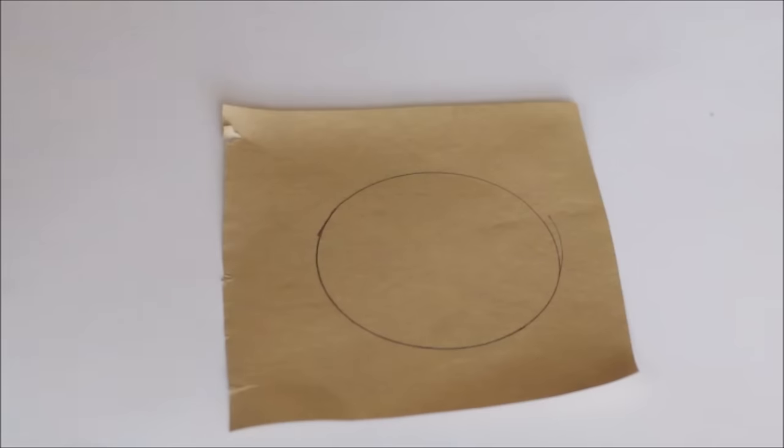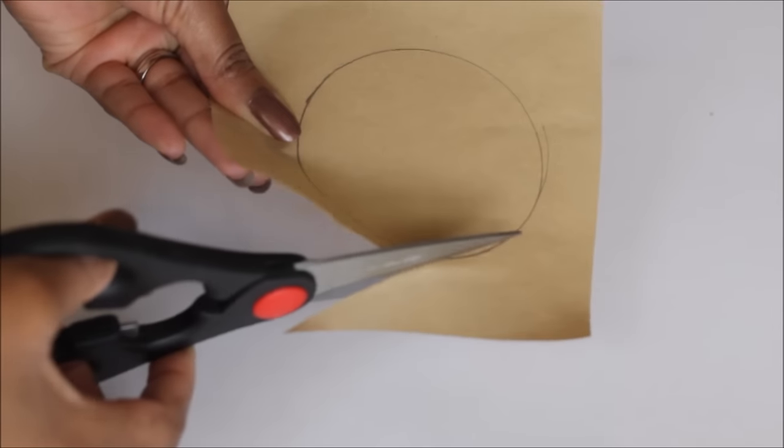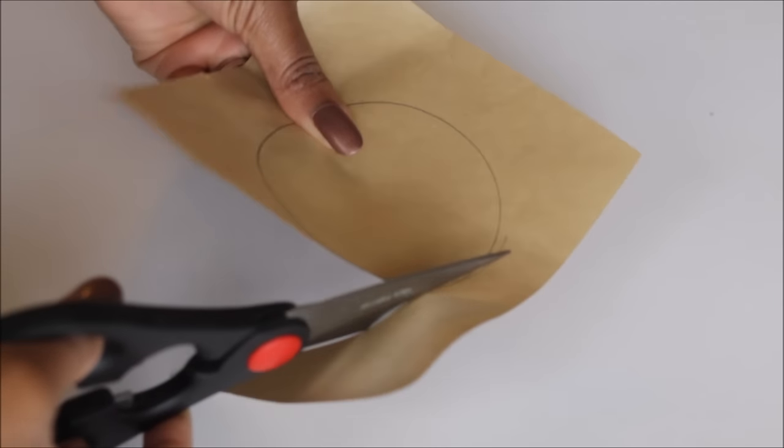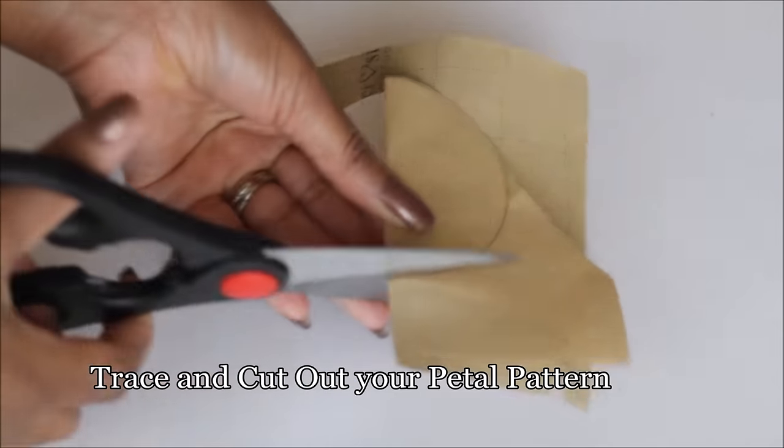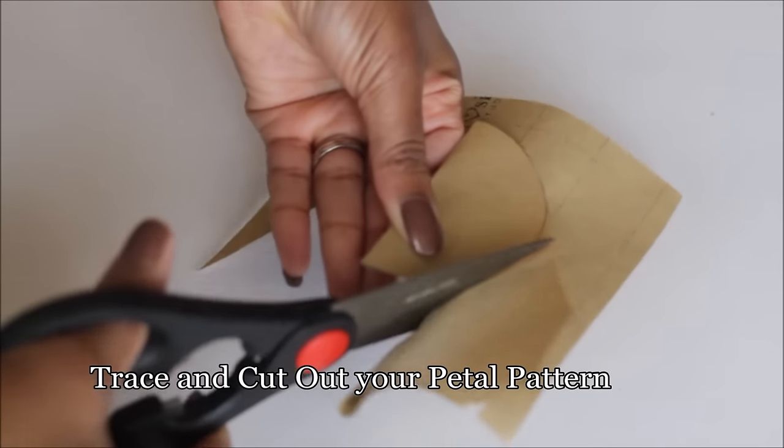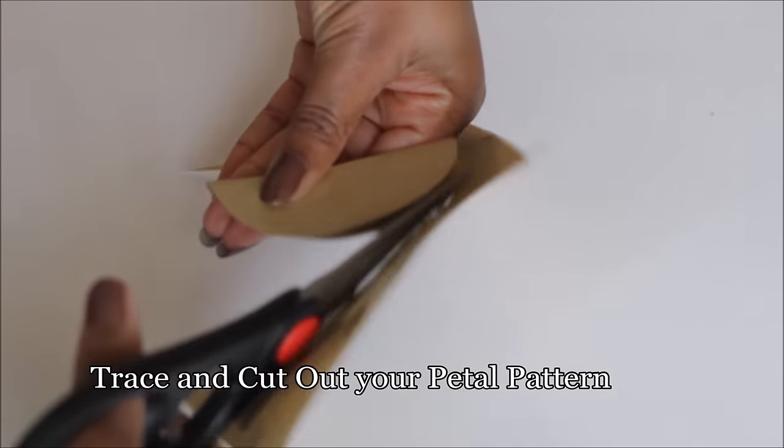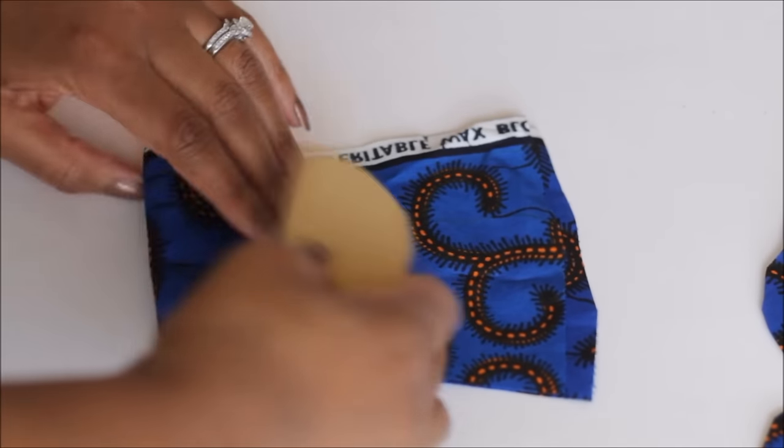Trace out and cut a circle onto paper, and this is going to be your pattern for your petals. I use the size of a drinking glass, but this can be any size you want. You can make it big or you can make it small. Just trace that out onto paper.